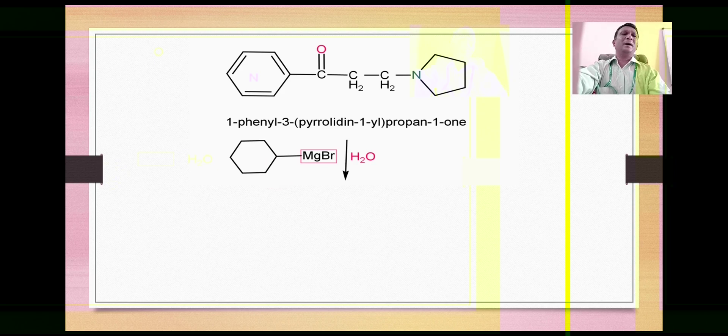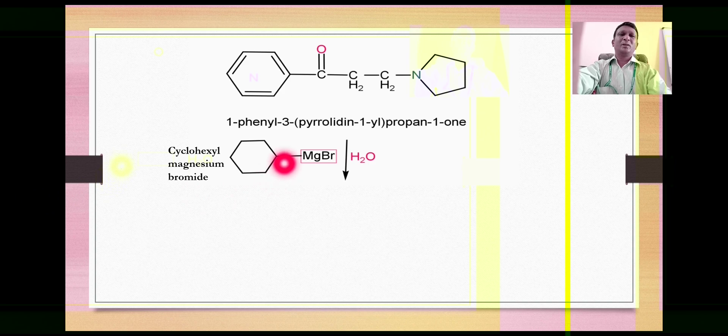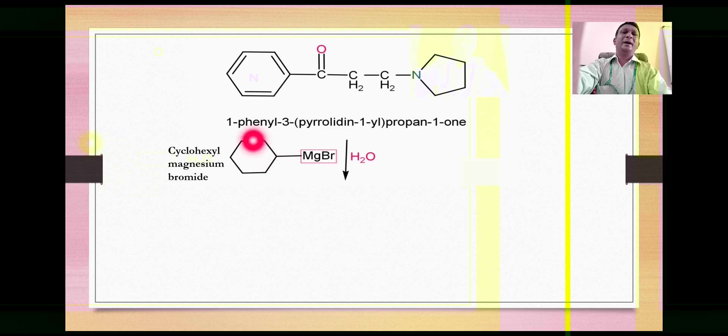This compound then gets attacked by a Grignard reagent. In this case it is cyclohexyl magnesium bromide. This cyclohexyl ring, though attached with magnesium, acquires partial negative character, so this attacks on this carbonyl carbon to give a nucleophilic addition reaction.